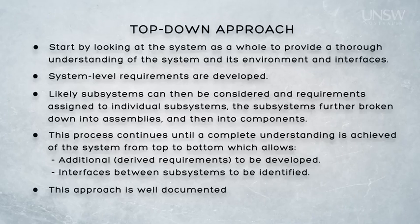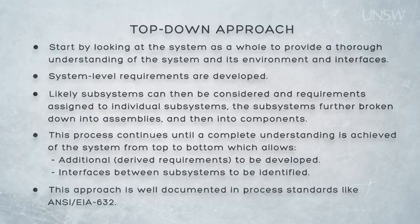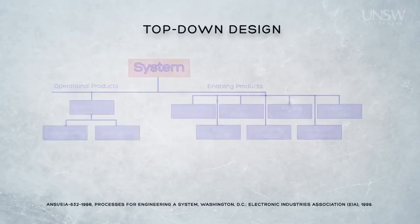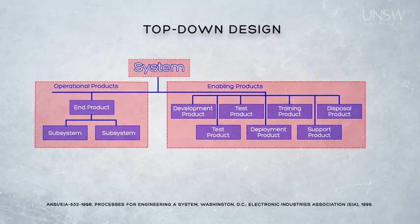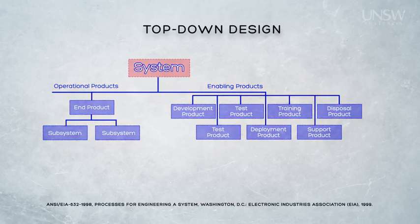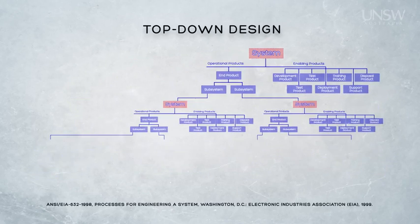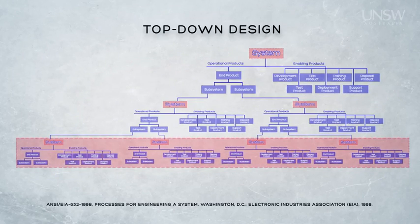Perhaps the best example of this top-down approach comes from NCEIA 632, the standard, which provides a product perspective. This is a top-down process from 632. Note that the system is decomposed into end products and enabling products — all the things that need to be done to produce the end products. The end product can be considered to comprise a number of subsystems, each of which can be considered to comprise an end product and an enabling product. Then each of those end products can be considered to comprise further end products and enabling products, and the process can continue until all the leaves of the tree have been developed — where the leaves of the tree are the work packages that get allocated to individual teams or individuals to do the work.